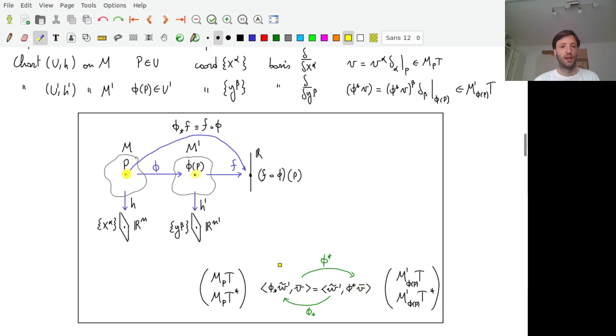So our push forward that is living on the tangent space on the other manifold. Then we had our pullback that allowed us to pull back a one-form living on the dual tangent space on the manifold M'.